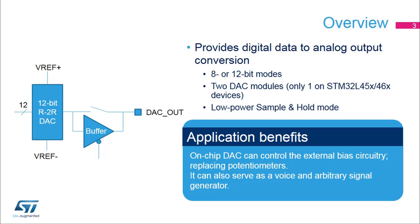Two DAC modules are embedded in the STM32L4 devices, except on STM32L45X/46X devices where only one DAC is implemented. A low-power sample and hold mode is also integrated. The DAC can interface with external POTS or BIAS circuitry, and it can also create voice and arbitrary signals.